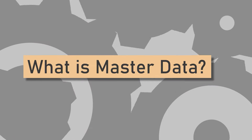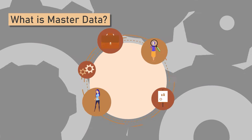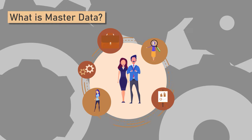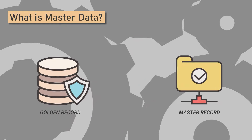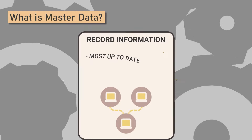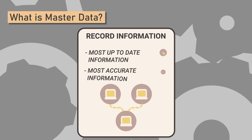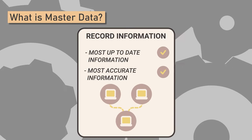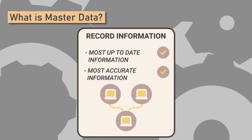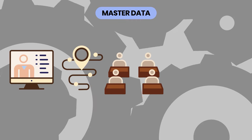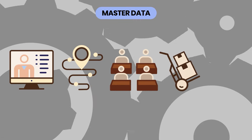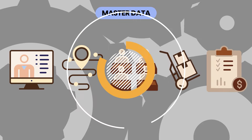Master Data is a key organizational data asset within a business. Also known as a golden record or master record, it contains the most up-to-date and accurate information that a business or organization relies upon. For example, Master Data could be information regarding a customer profile, store location, product range, material supplier, sales report, and more.